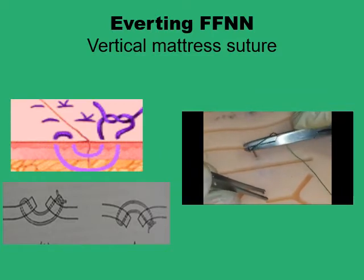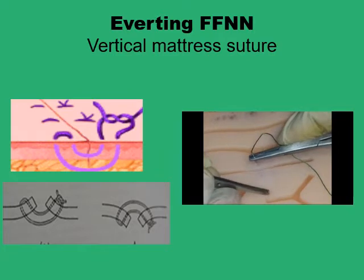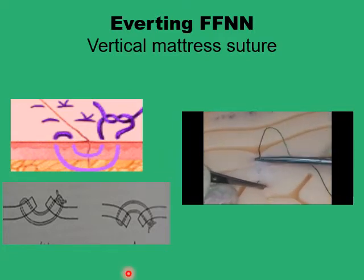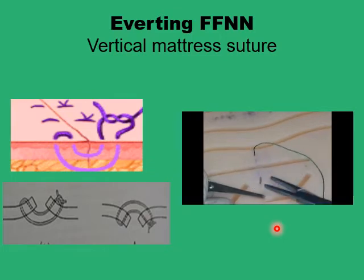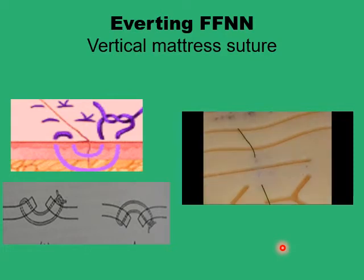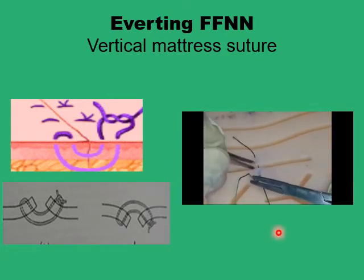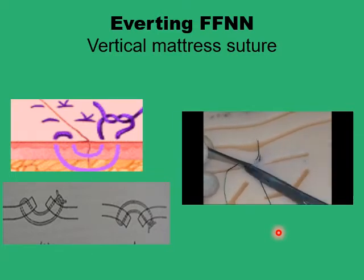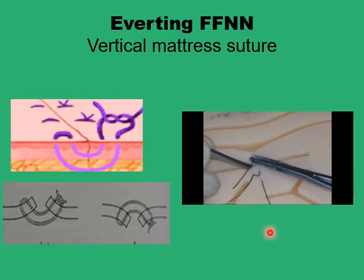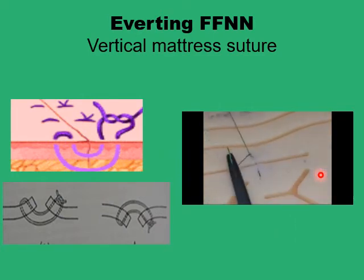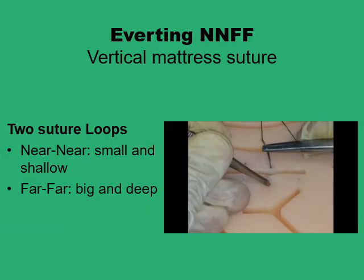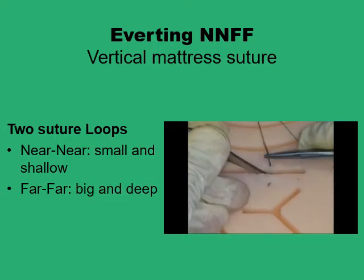I will use the far-to-far suture first — this is the first loop, the deeper and longer one. Retrieve the needle, reverse the direction, and then do the near-to-near. Now we have the two loops and you just tie the knot, and you will see a consistent eversion of the wound edge when this is tied. The same effect can be produced by using the near-to-near far-to-far configuration of the vertical mattress suture.